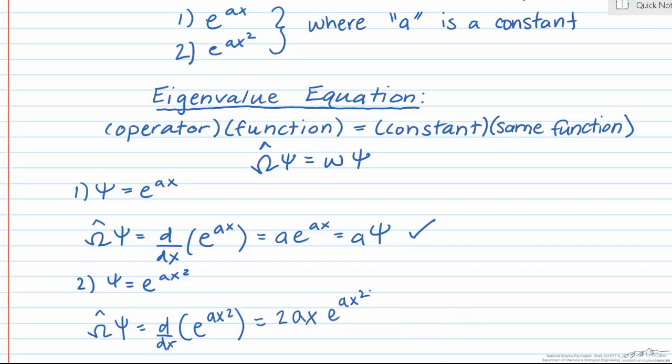In this case, 2ax, which is what precedes our function, is not a constant value because it depends on x. So this function does not satisfy our definition of an eigenfunction for our specified operator.